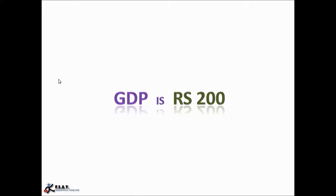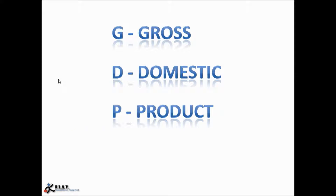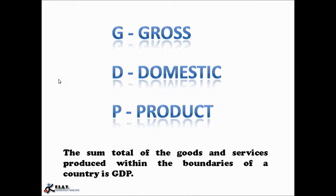In this example, we have assumed that there are only two companies in our country, but in reality there are thousands of companies in a country. So the calculation of GDP is actually far more complex than what we have done here. But all that we need to remember is that GDP is the sum total of all the goods and services produced within the boundaries of a nation.